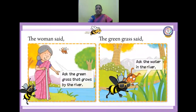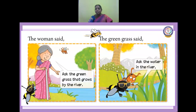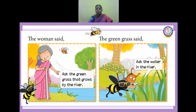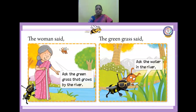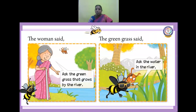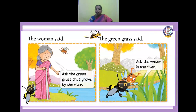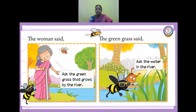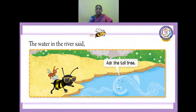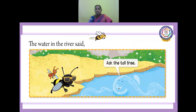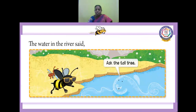The woman said: ask the green grass that grows by the river. The woman is telling it to go and ask the green grass — it will tell you. It went to the green grass. The green grass said: ask the water in the river. You go and ask the water. The water in the river said: ask the tall tree.